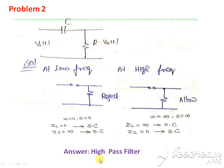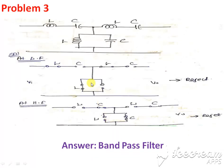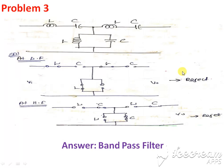From these two cases we confirm the answer is a high pass filter. Third problem: at low frequency, the inductor is a short circuit and the capacitor is an open circuit, so the input is not allowed to pass to the output terminal — this case is rejected. At higher frequency, the inductor is open and the capacitor is a short circuit, so the input is again not allowed to pass to the output terminal.